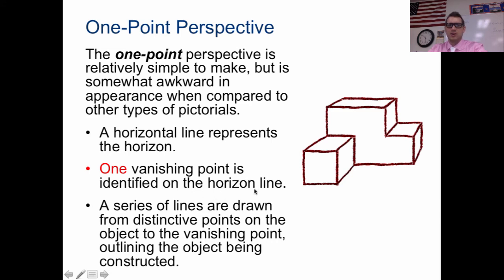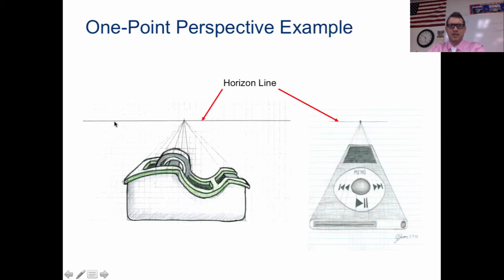It has one vanishing point in the horizon and has a series of lines drawn from distinct points to the object. So let's talk about those. First off, horizon line. This is the horizon line. This is the vanishing point.